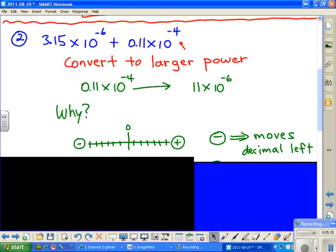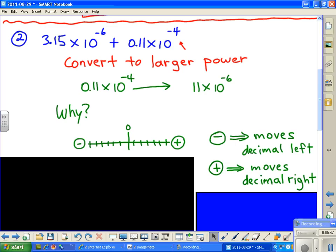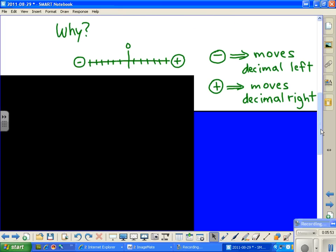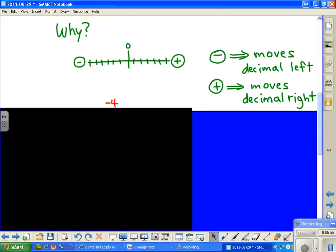Well, that means that negative powers of 10 are going to move the decimal to the left, and positive powers of 10 are going to move the decimal to the right. I hope that's making sense, because now with that in hand, we can go back and look at this thing.